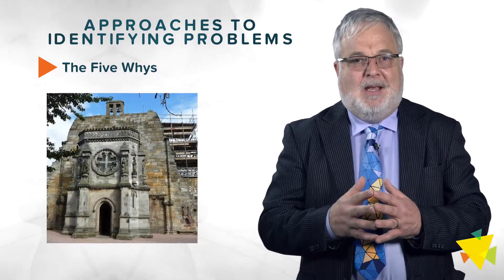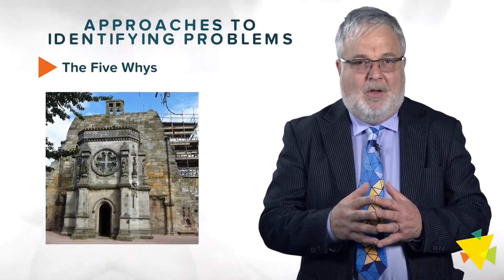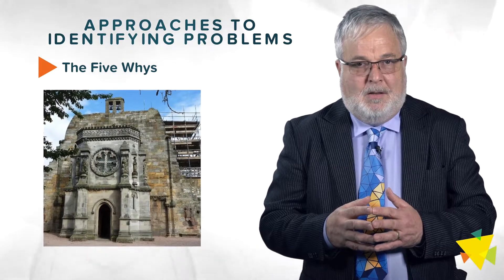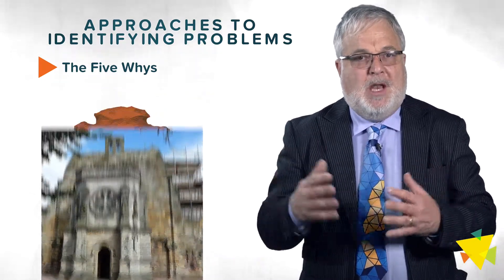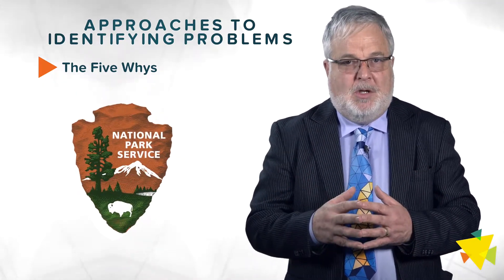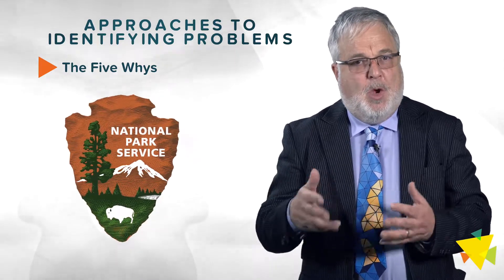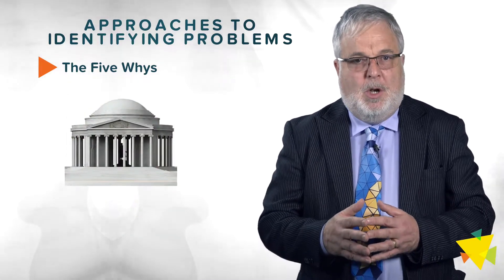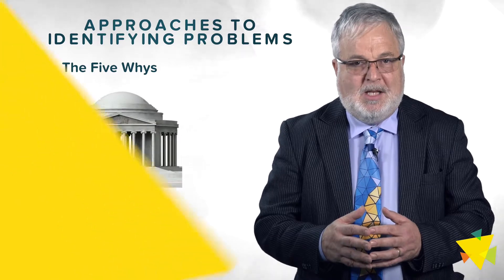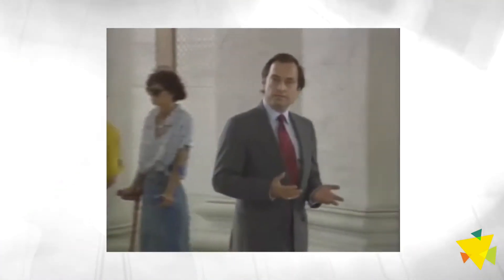The latter is a classic example of the use of the five whys, as it was addressed by the U.S. National Park Service, who were faced with the problem that the stonework on the Jefferson Memorial in Washington was deteriorating more rapidly than anticipated. The stone in this building was crumbling. What could be causing this decay? It turns out that it was actually the frequent washings of the stone that was creating the problem.